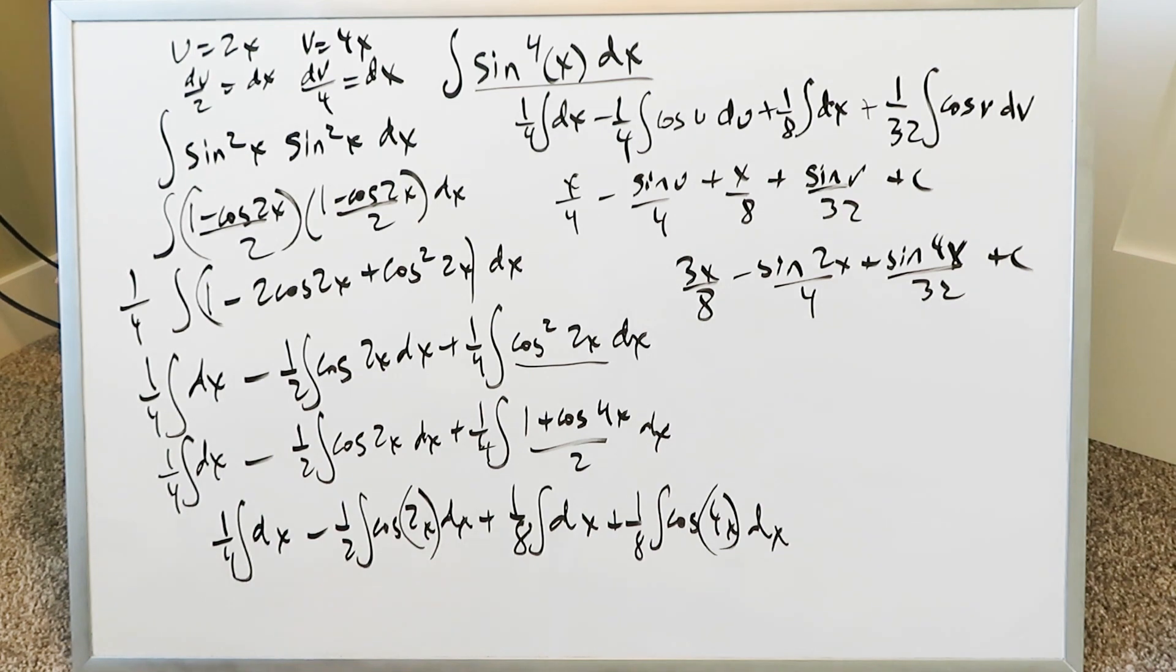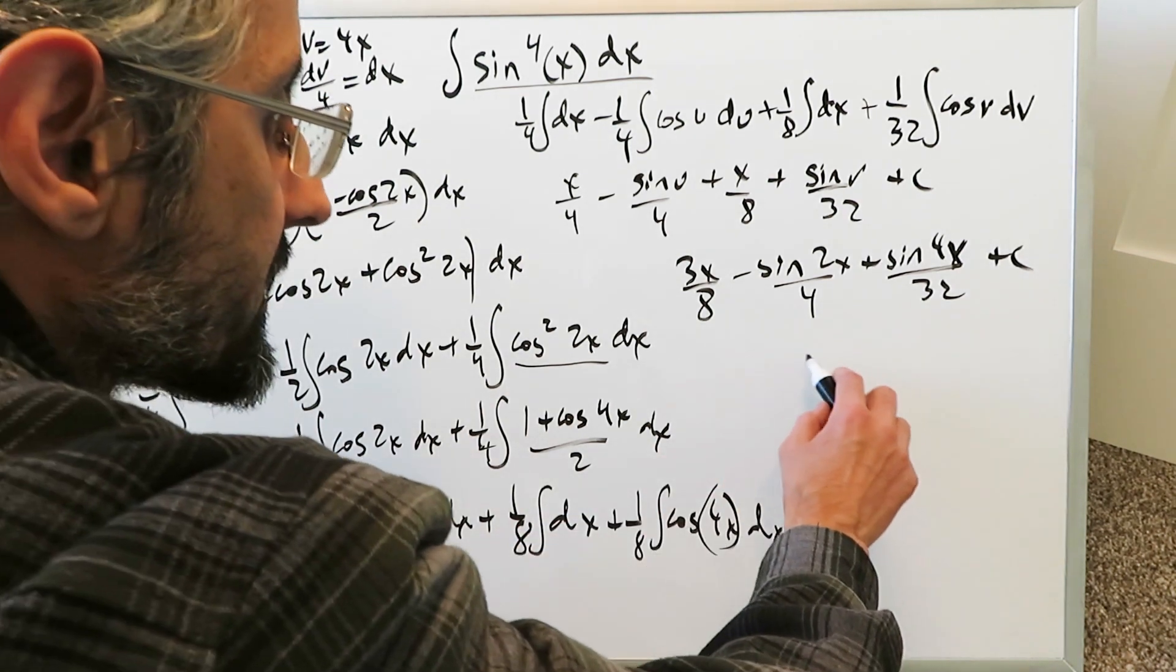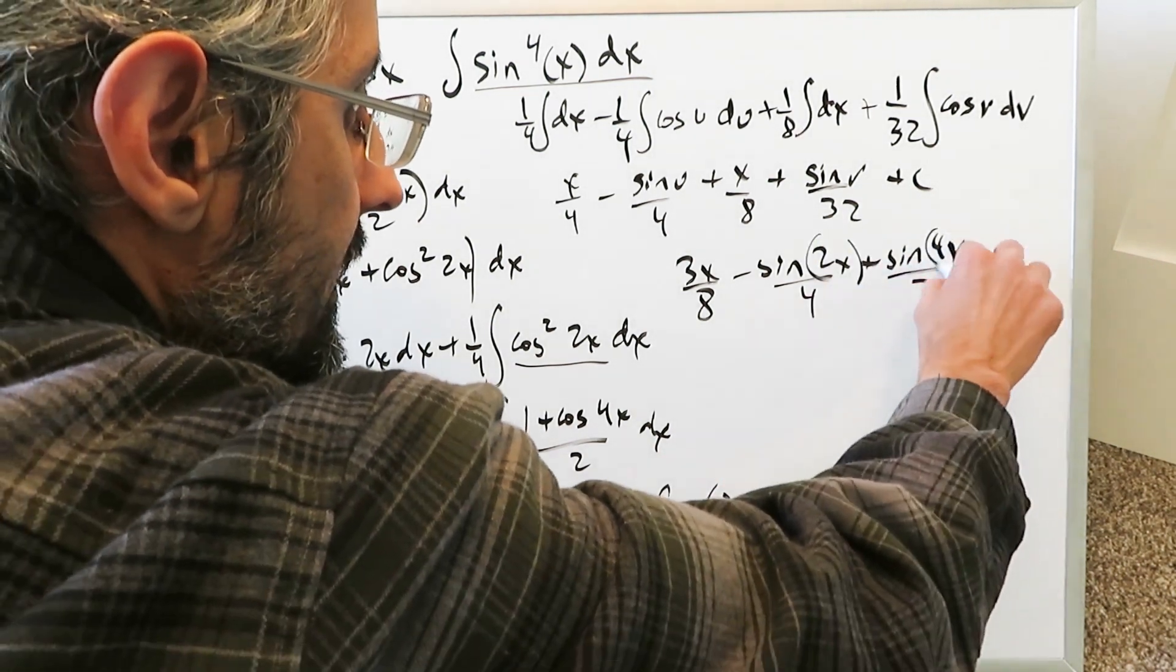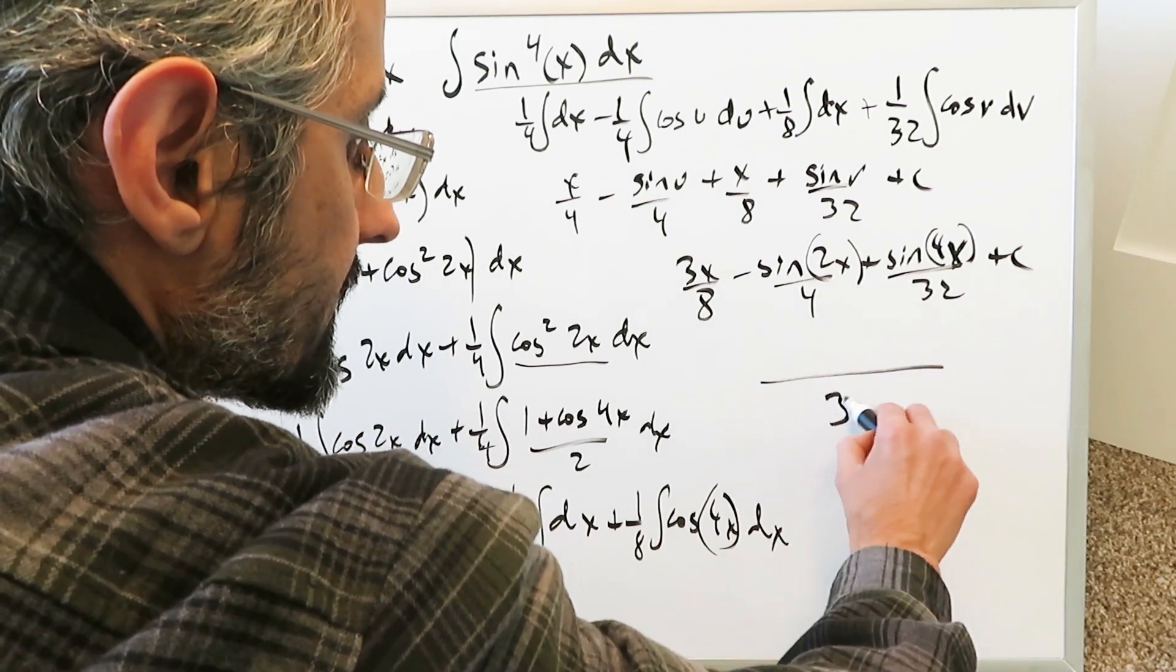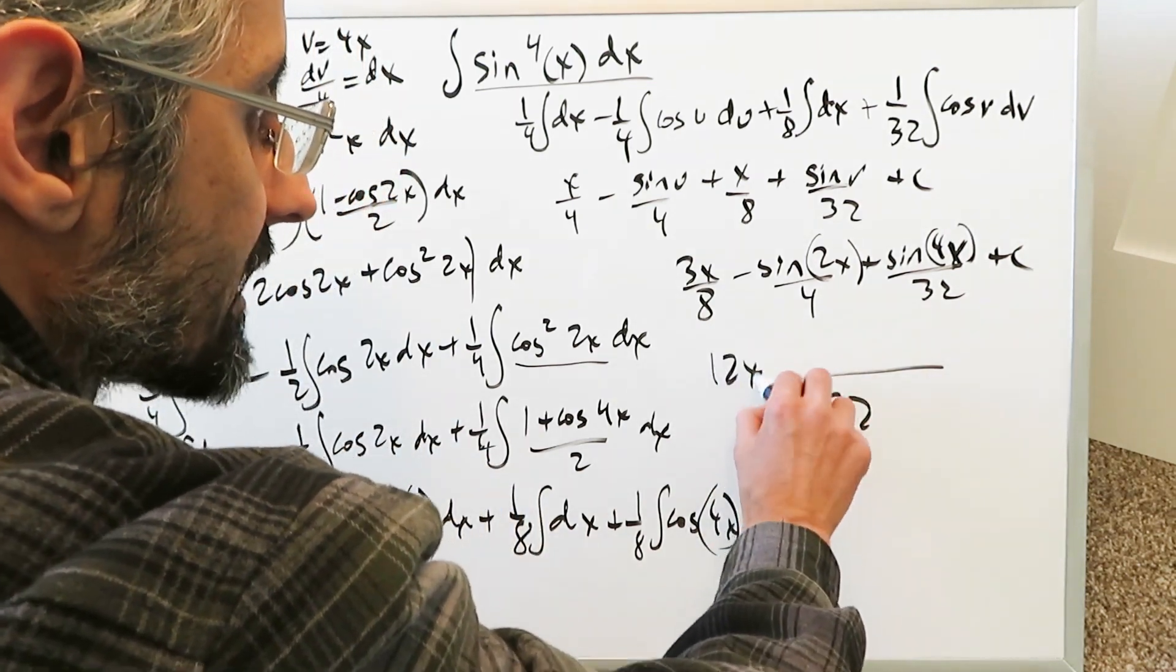Minus sine u which was a 2x over 4 plus sine v which is a 4x over 32 plus c. This looks like here to be a good answer to me. If we want we could do a common denominator. Nothing wrong with that. A good common denominator here would be 32. 8 goes in 32. 4 times you'll have a 12x.